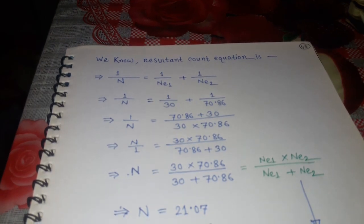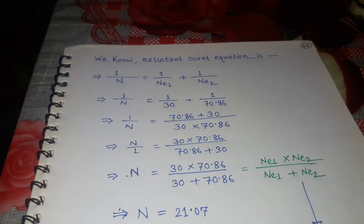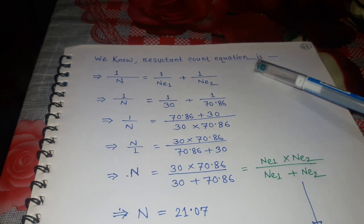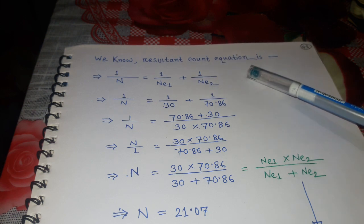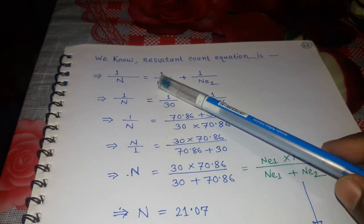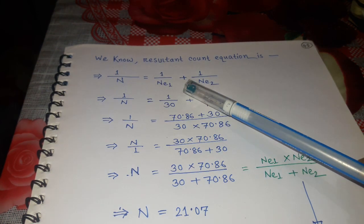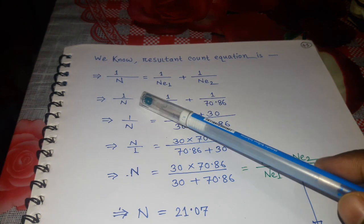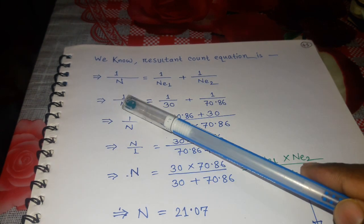We know the resultant count equation is: 1 divided by N equals 1 divided by N1 plus 1 divided by N2.